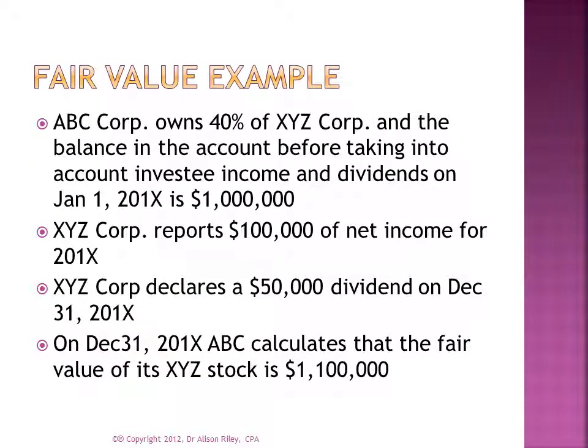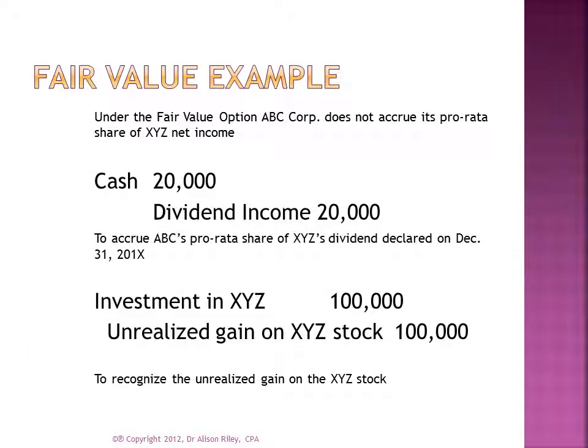Assume ABC Corp. owns 40% of XYZ Corp. and the balance in the investment account before taking into account investee income and dividends for 20X1 is $1 million. XYZ Corp. reports $100,000 of net income for 20X1 and declares a $50,000 dividend on December 31st, 20X1. On December 31st, 20X1, ABC calculates the fair value of its XYZ stock to be $1.1 million. Under the fair value option, ABC Corp. does not accrue its pro-rata share of XYZ net income. ABC Corp. does recognize dividend income of $20,000 upon XYZ's declaration of its dividend. ABC Corp. would debit the investment account for $100,000 and credit unrealized gain on XYZ stock for $100,000 to recognize the unrealized gain on the XYZ stock.